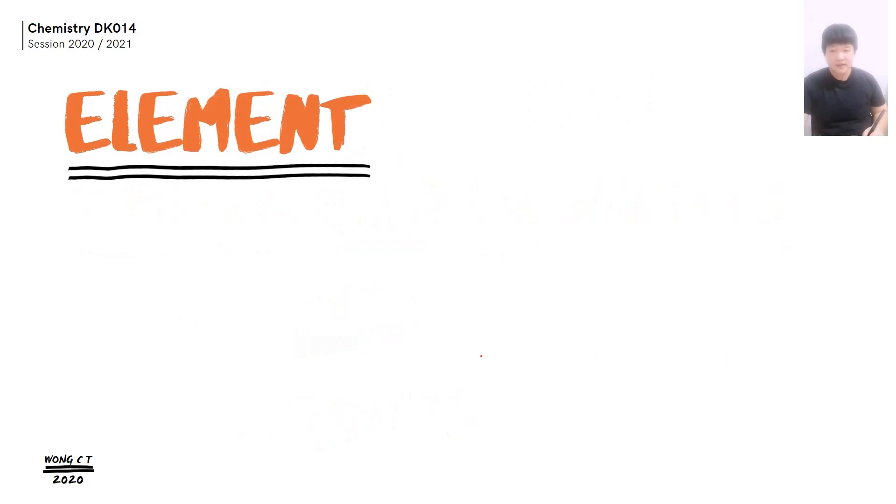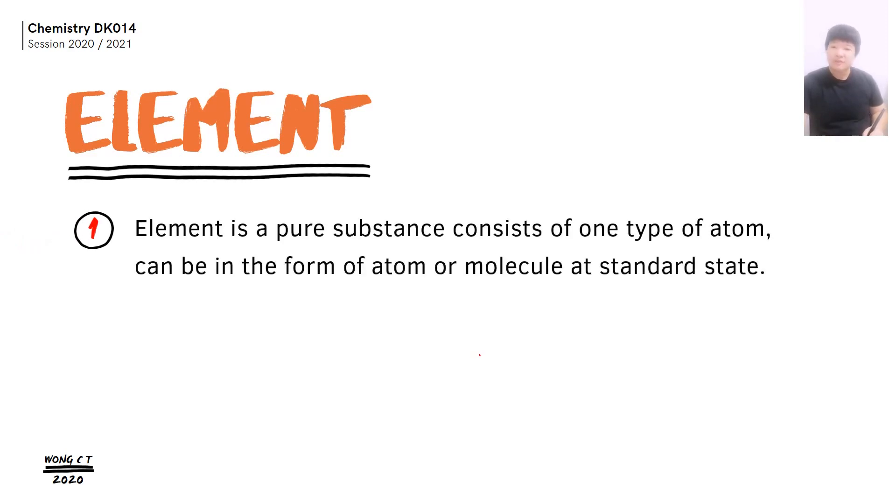Let's recall what is element. We have talked about this in your subtopic 1.1. And the keywords of element is one type of atom. Element is a pure substance that made up by only one type of atom.